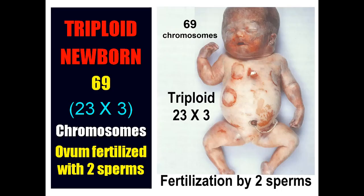A newborn resulting from fertilization by two sperms would have 69 chromosomes and is called a triploid newborn — triple the haploid number. This newborn or fetus usually is born dead.